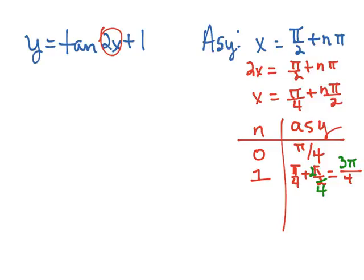If we were to let n be 2, we would have π over 4 plus 2 times π over 2, which is just π. So π over 4 plus π would be equal to 5π over 4.